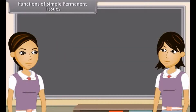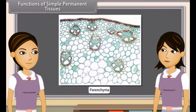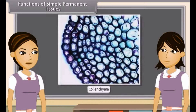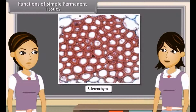Parenchyma serves as a packaging tissue to fill the spaces between other tissues and maintain the shape of the plant. Due to its turgid cells, it also stores and assimilates food. Transport of material occurs through cells or cell walls of parenchyma, and their intercellular spaces allow gaseous exchange. They also store waste products of plants like tannin, gum and raisins. Collenchyma is a mechanical tissue, so it provides mechanical support and elasticity. Sclerenchyma is mainly mechanical and protective in function — it gives strength, rigidity, flexibility and elasticity to the plant body, enabling it to withstand various strains.